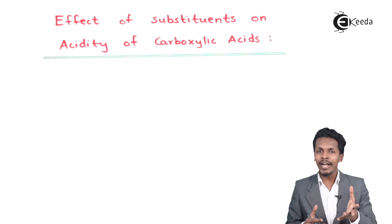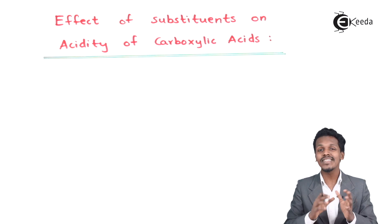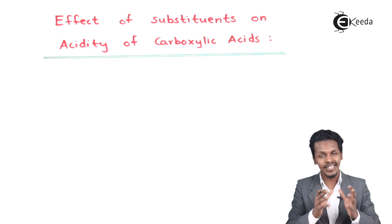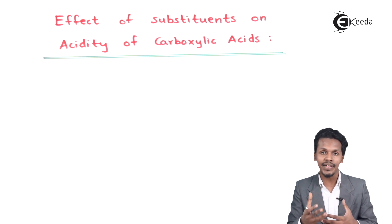There are two kinds of groups that we know — electron withdrawing groups and electron donating groups. So what is the effect of these kinds of groups on the acidic strength of the carboxylic acid? This is what I want to discuss.